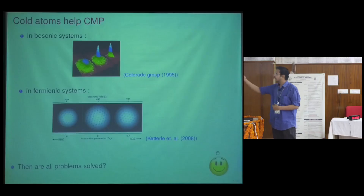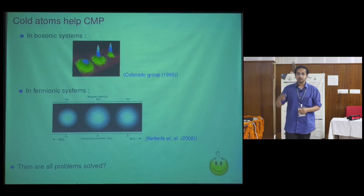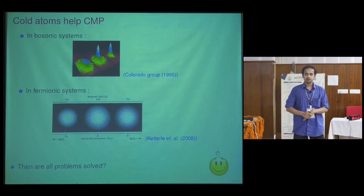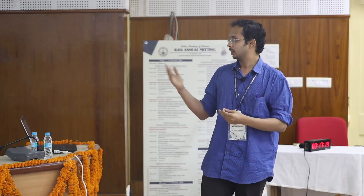Bose-Einstein condensate was predicted long ago in the 1920s, whereas it was realized experimentally in the cold atom context in the 1990s — 70 years after its prediction. In fermionic systems, the BCS-BEC crossover was also realized not very long ago. Having said all this, it looks like these systems are very good — so what else do we need?